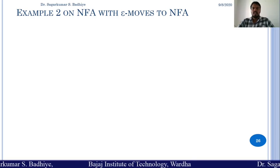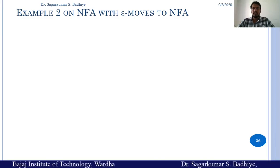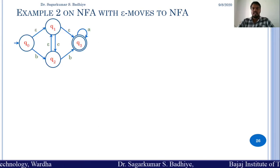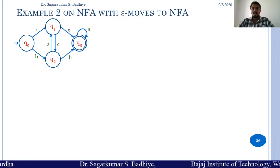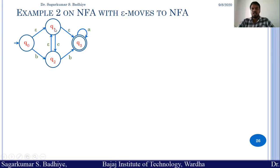Good morning and welcome back to the next class of theory of computation. In this class we are going to consider another example on NFA with epsilon move to NFA conversion. The NFA with epsilon move is given by the transition diagram, wherein there is an epsilon transition from Q0 to Q1, Q2 to Q1, and Q1 to Q3.